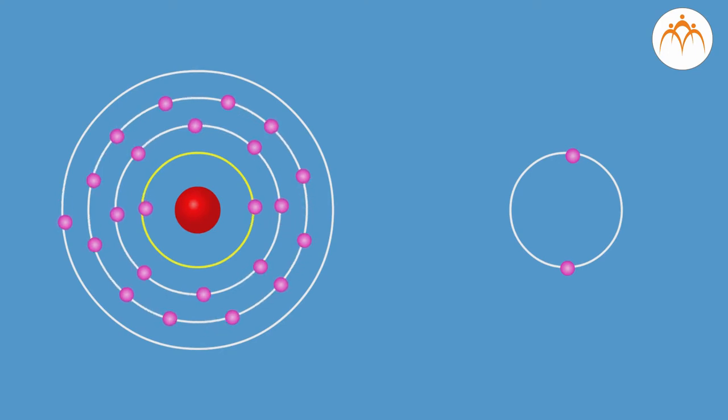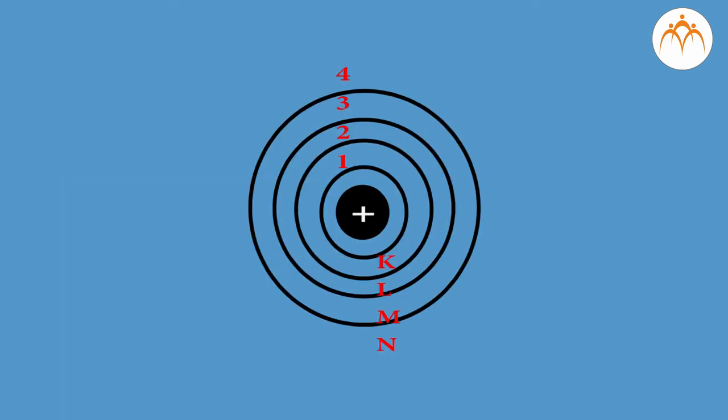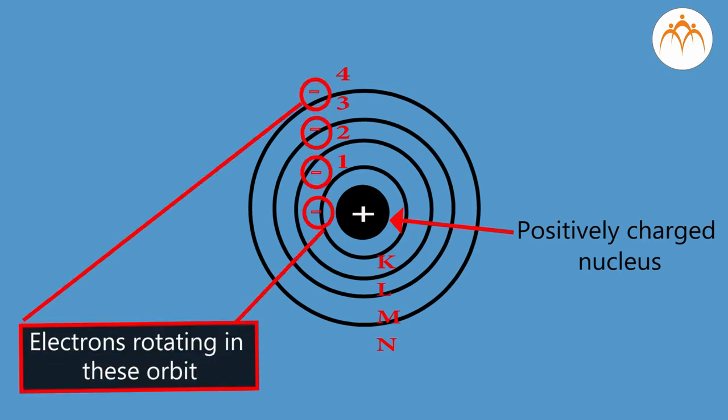So which shell is closest to nucleus? K shell. We can represent Bohr's stable orbit atomic model as positively charged nucleus with electrons rotating in these orbits.